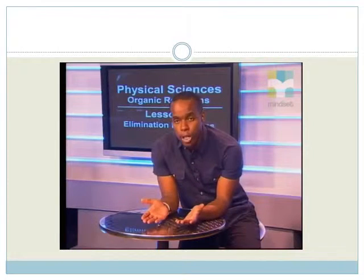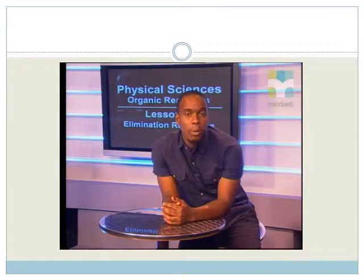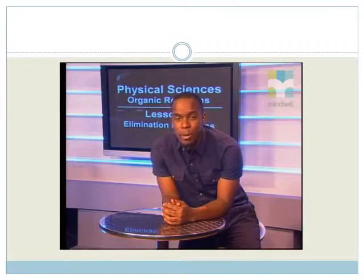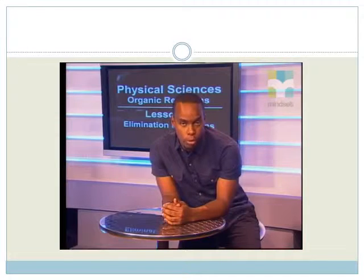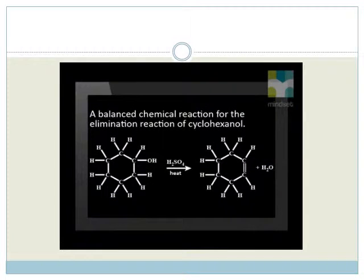Now, use the structural formulae to write out a balanced chemical reaction for the elimination reaction of cyclohexanol. If you drew this diagram, you will be correct. Notice how the water molecule can be spotted in the first diagram. The sulfuric acid in this reaction is a catalyst and that is why it is written above the arrow.